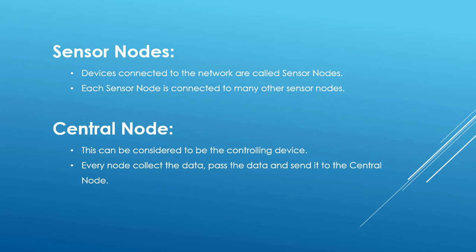The devices connected to the network are called sensor nodes, and each sensor node in a wireless sensor network is connected to many other sensor nodes. A central node can be considered a controlling device that controls all the nodes. Every node collects data, performs operations, and then sends the result to the central node, which is connected to every other node.